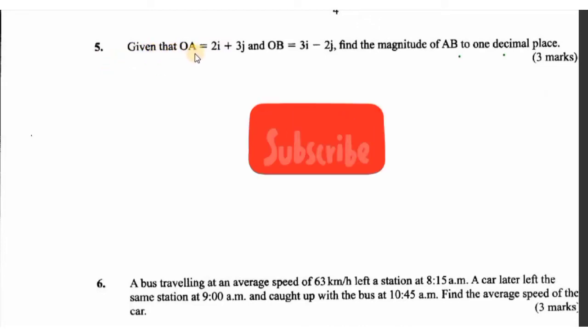Question number 5 is on vectors, and we are asked that given that OA is 2i plus 3j and OB is 3i minus 2j, find the magnitude of AB to one decimal place.